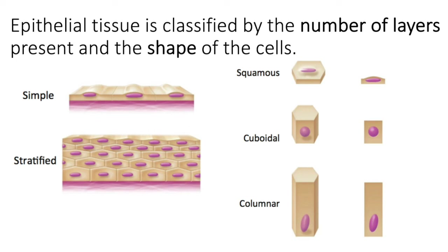Then we classify the tissue based on the shape of the cell. The shape can be squamous — flat or scale-shaped — cuboidal, which is cube-shaped, or columnar, which is column-shaped. Importantly, we classify the tissue based on the shape of the top layer. So if the bottom layer of cells looks cuboidal but at the apical surface the cells are squamous, we classify it as stratified squamous epithelial tissue.